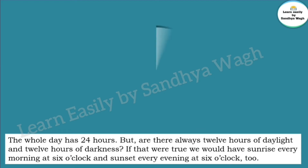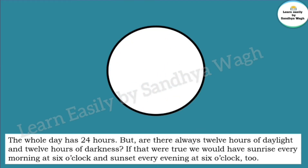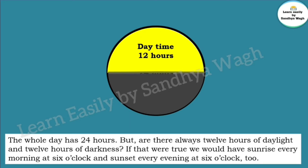The whole day has 24 hours. But are there always 12 hours of daylight and 12 hours of darkness? If that were true, we would have sunrise every morning at 6 o'clock and sunset every evening at 6 o'clock too.